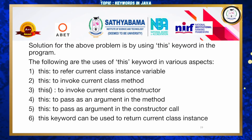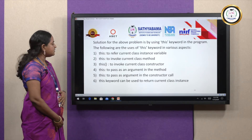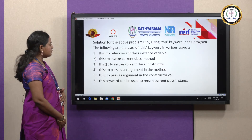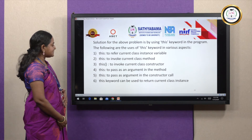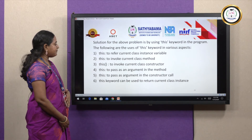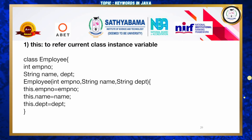To avoid this problem, we use the 'this' keyword. The uses of 'this' include: referring to the current class instance variable, invoking the current class method, invoking the current class constructor, passing as an argument in a method, passing as an argument in a constructor call, and returning the current class instance.